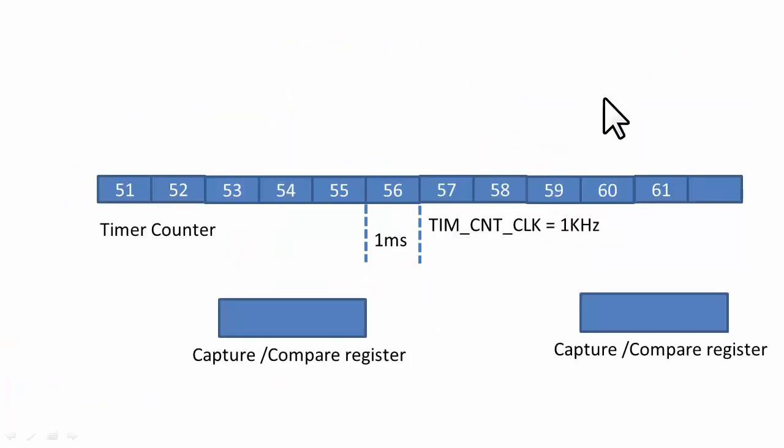First what happens is your timer's counter will be triggered and it will keep counting. When you trigger the time base generation unit of the timer, it will keep counting until it reaches the error value. Let's assume that the error value is at maximum, so it will just be counting. The timer counter will be counting like 1, 2, 3, 4, 51, 52, 53, etc.